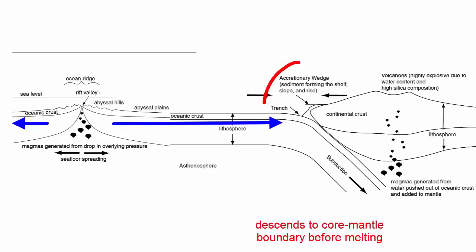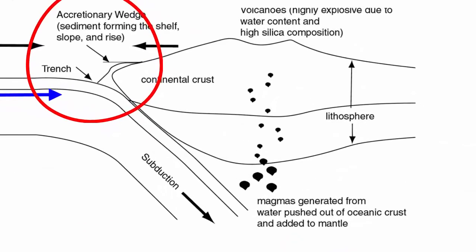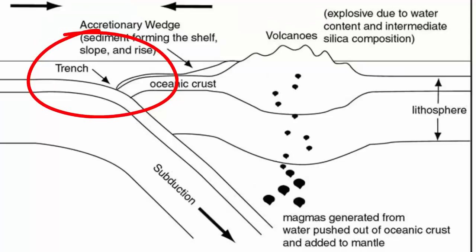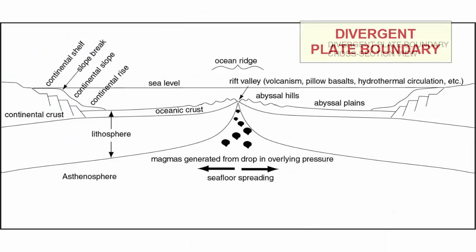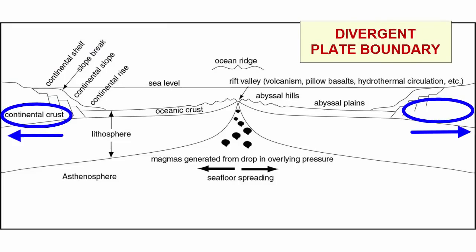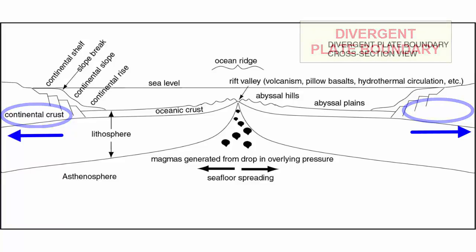Where the old ocean lithosphere sinks, we get a deep trench on the seafloor above. When next to a continent, this trench can fill with lots of sediment. When next to ocean islands, it tends to be deeper, like the Marianas Trench. At divergent plate boundaries, the plates move apart, and the old continental portions of these plates are also spreading further and further apart. Where continents are shoved towards other plates, they will collide.